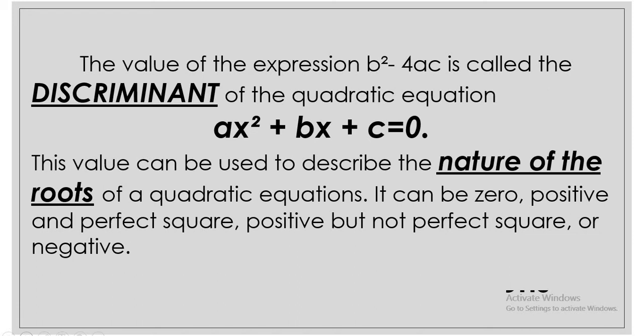The discriminant can be 0, positive and a perfect square, positive but not a perfect square, or negative.